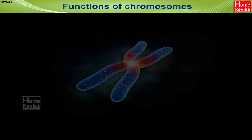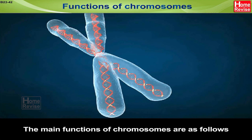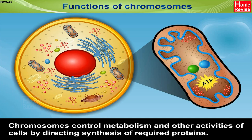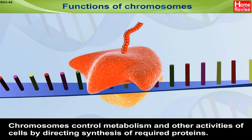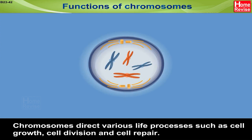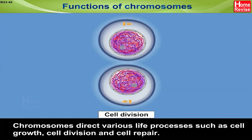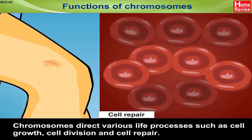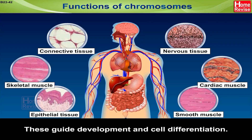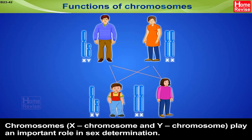Functions of chromosomes: Chromosomes are hereditary vehicles carrying genes from parents to offspring. Chromosomes control metabolism and other activities of cells by directing synthesis of required proteins. Chromosomes direct various life processes such as cell growth, cell division, and cell repair. They guide development and cell differentiation. The X chromosome and Y chromosome play an important role in sex determination.